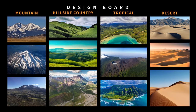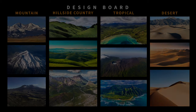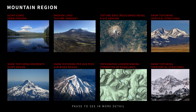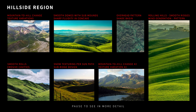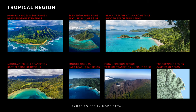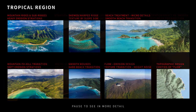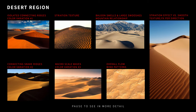I have a design board that I've made to help guide some of the features in the process of my terrain. For this series we're going to design a four-biome landscape so we can showcase as much of World Creator 2 as possible. Those regions include a mountain region, a hillside region, a tropical region, and a desert region.